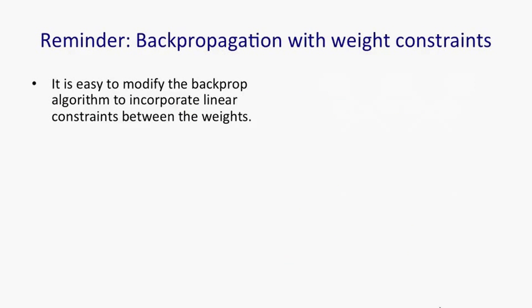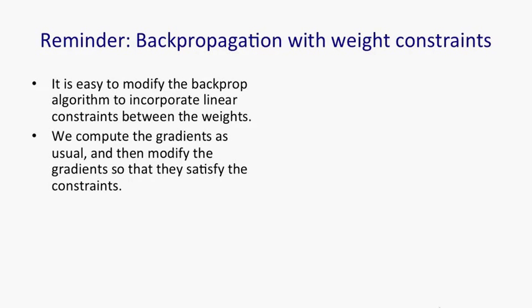Now, backprop is good at learning when there are weight constraints. We saw this for convolutional nets. We can actually incorporate any linear constraint quite easily in backprop. We compute the gradients as usual, as if the weights were not constrained, and then we modify the gradients so that we maintain the constraints.